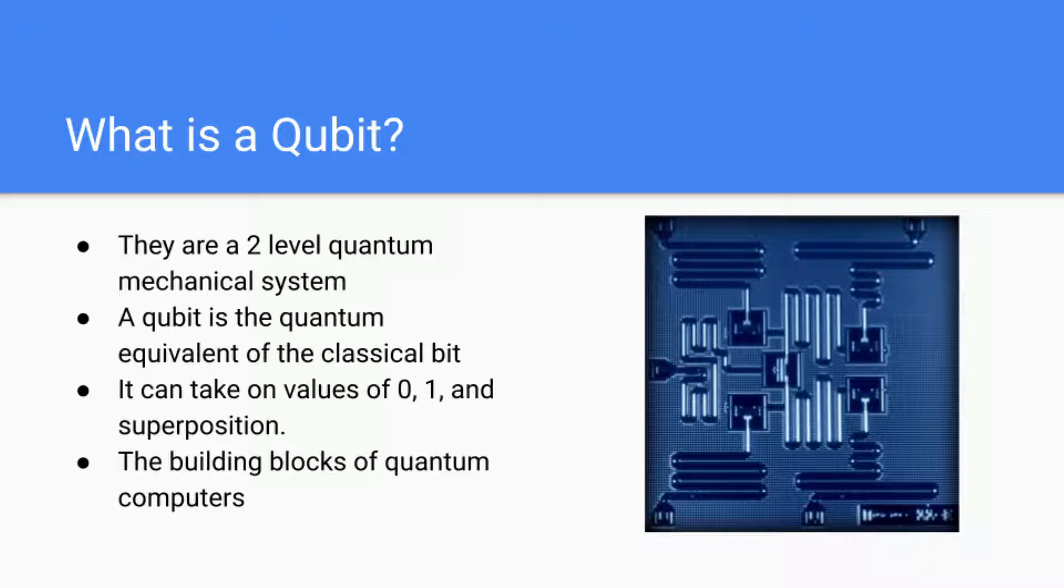First let's establish what a qubit really is. A qubit is a two-level quantum mechanical system, which means it can have values of zero or one. A qubit is the quantum equivalent of a classical bit. Qubits literally translate to quantum bits. Third, qubits can take on values of zero, one, and superposition.